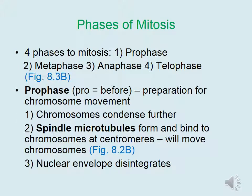There are four phases to mitosis: prophase, metaphase, anaphase, and telophase. Prophase prepares chromosomes for movement. 'Pro' as a prefix means 'before,' so this refers to everything that takes place prior to chromosome movement.